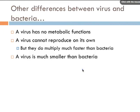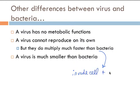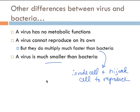Other differences between virus and bacteria: a virus has no metabolic functions and cannot reproduce on its own. However, they do multiply much faster than bacteria by invading a cell and hijacking it to reproduce. A virus is also much smaller than a bacteria. You want to know at least three of these differences between a virus and a bacteria.